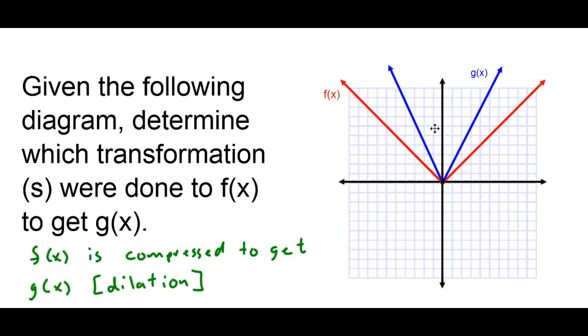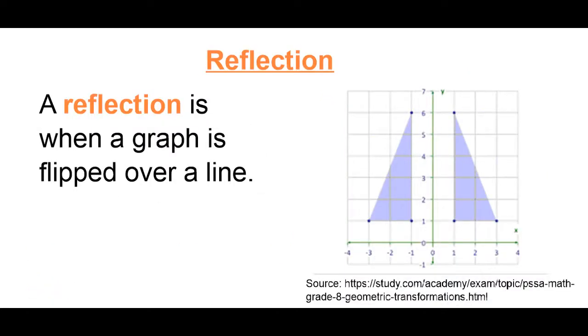So, we talked about transformation. We talked about dilation. There's one more we're going to talk about, and that is this thing called a reflection. A reflection is when a graph is flipped over a line. For example, here I have this triangle. Let's say this is my original. I have my triangle here. Let me just mark these points.